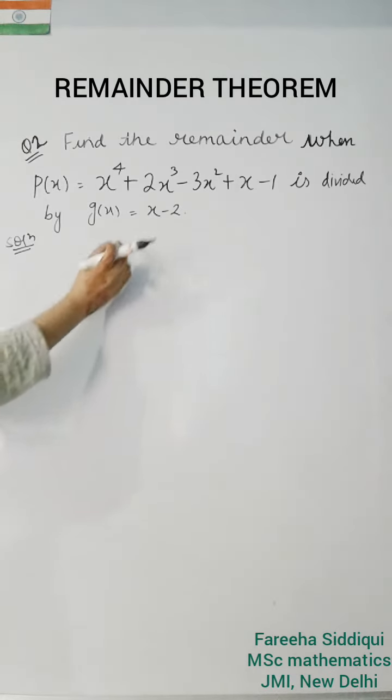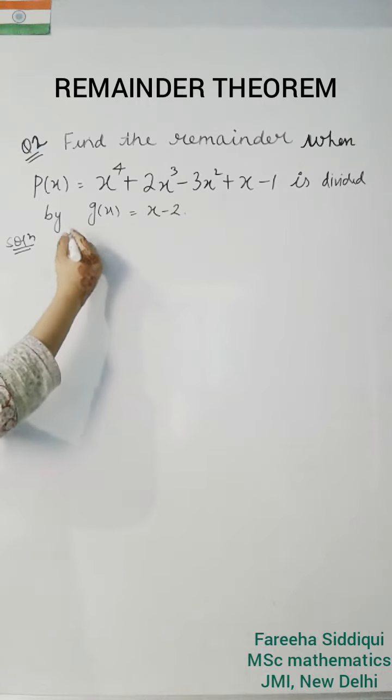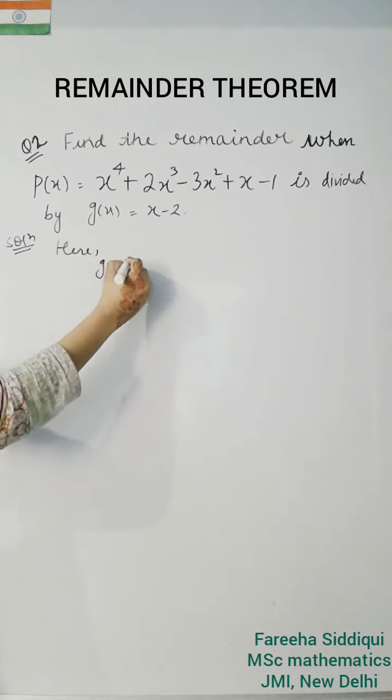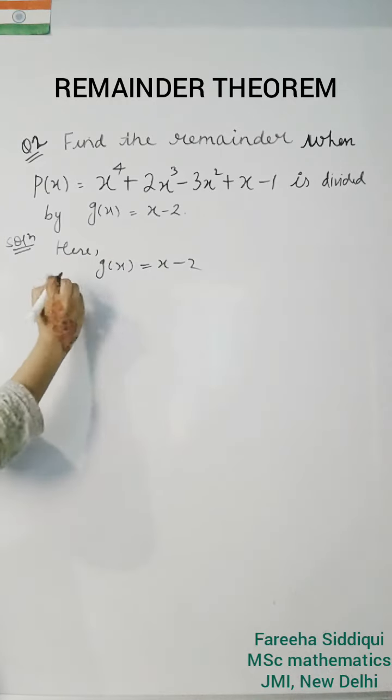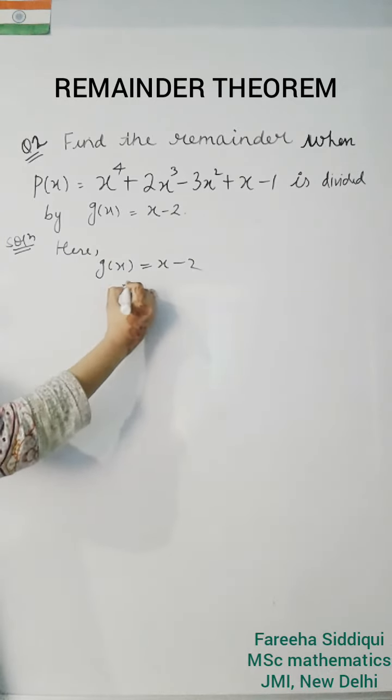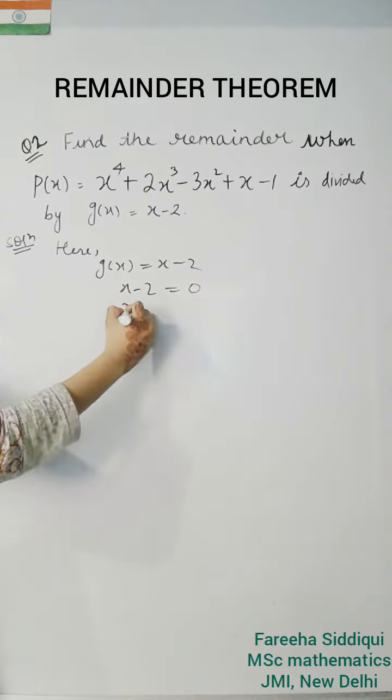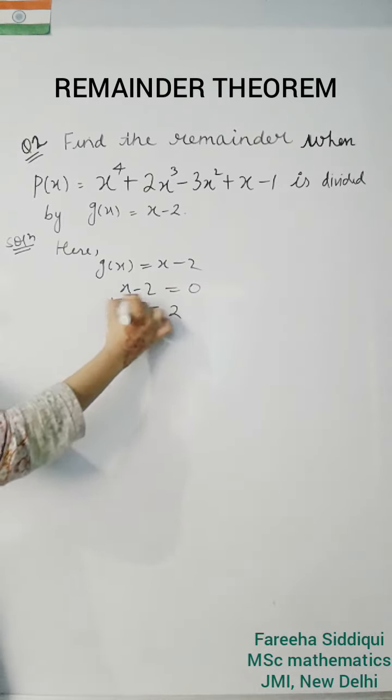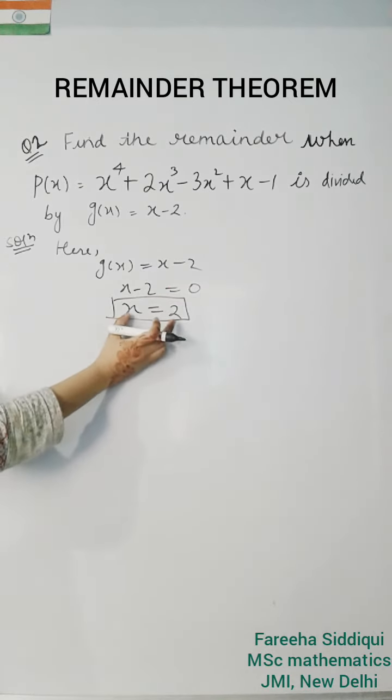First of all, we will find out zero of gx. So how we find out zero? We put gx equals to zero. Here gx is equals to x minus 2, so we will put x minus 2 equals to zero. This implies x is equals to 2. So our zero is 2.